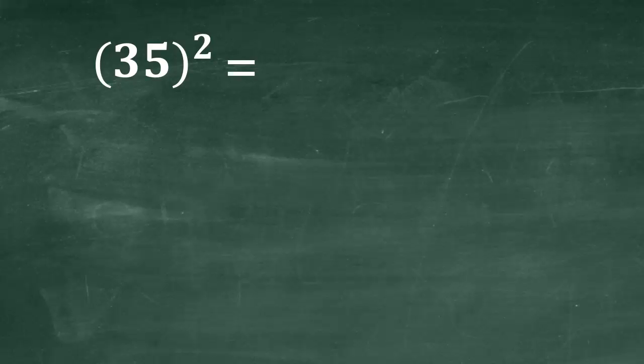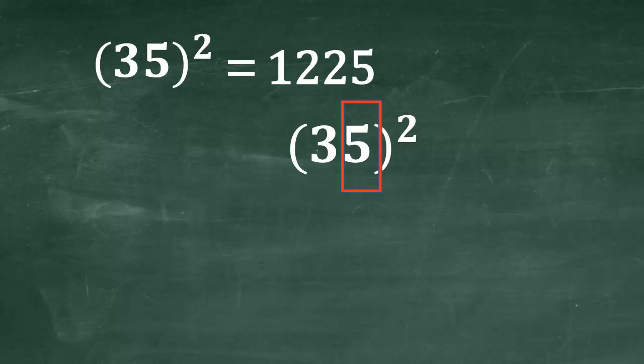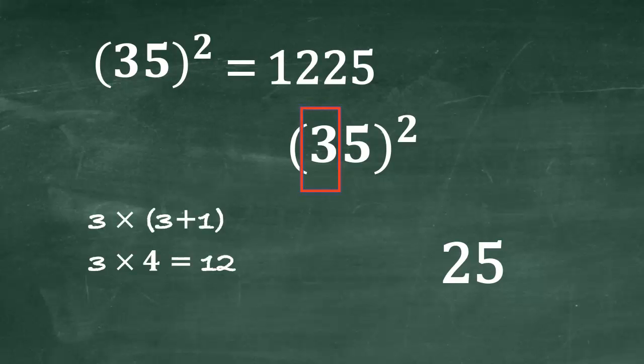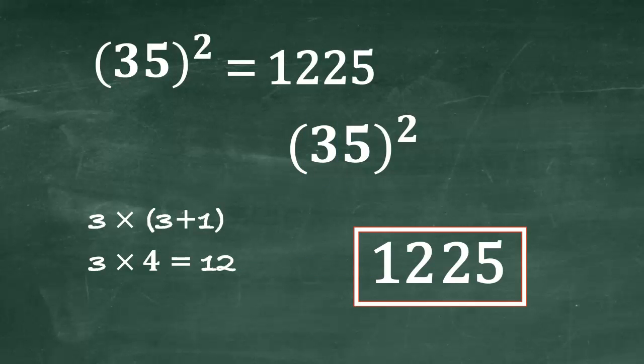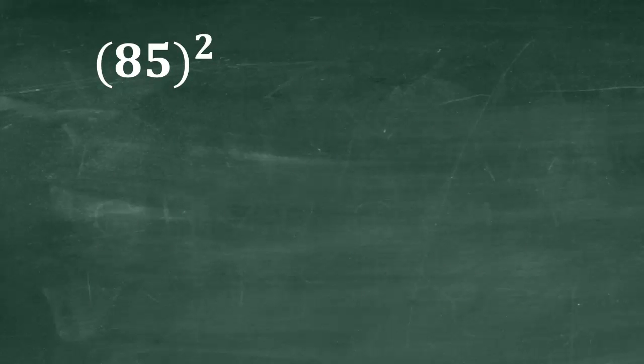Here, square of 35, square of 35 is 1225. Now, multiply 3 and 1 more than 3, it means 3 into 4 is 12. Write 12. Therefore, square of 35 is 1,225. Interesting, right? I hope it's clear.